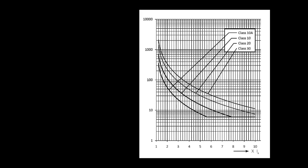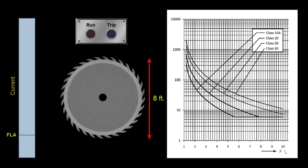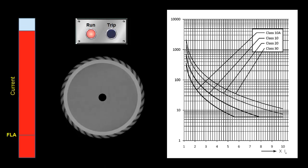For example, let's take a look at this industrial saw that has an 8-foot diameter, which could take several seconds to get up to speed. It not only has a high inrush to get it going initially, but it's also going to pull several times the FLA for the entire duration of startup.